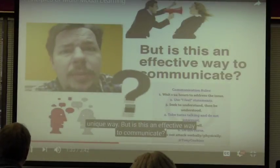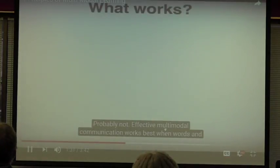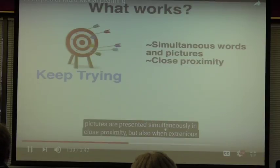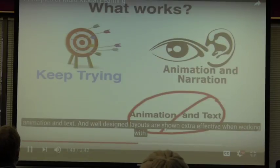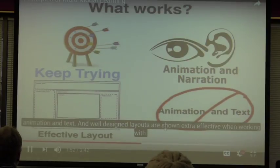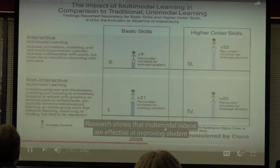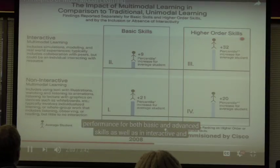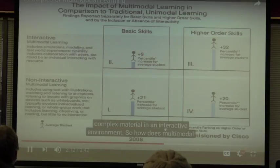Is this an effective way to communicate? Effective multimodal communication works best when words and pictures are presented simultaneously and in close proximity, but also when extraneous words and images are removed. Animation and narration work better than animation and text, and well-designed layouts are shown to be extra effective when working with learners with low knowledge or with high spatial learning abilities. Research shows that multimodal videos are effective at improving student performance for both basic and advanced skills, as well as in interactive and non-interactive environments, but they are most effective when used to present complex material in an interactive environment.